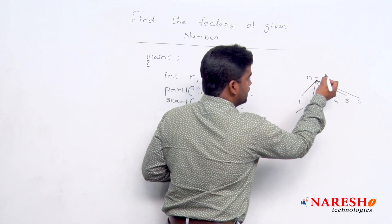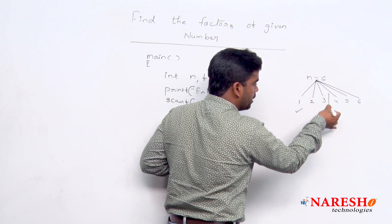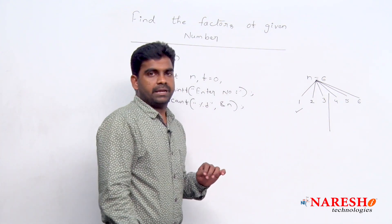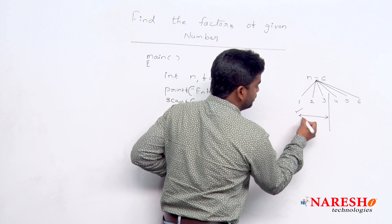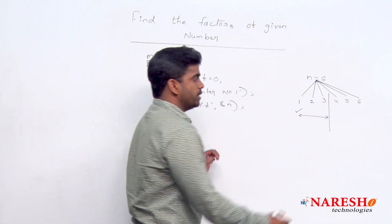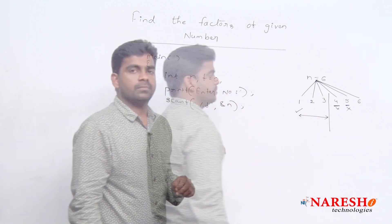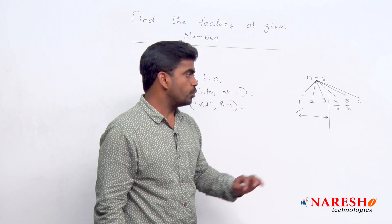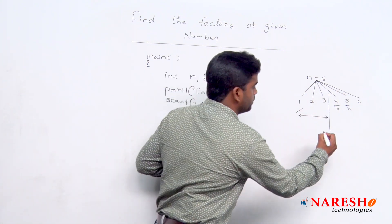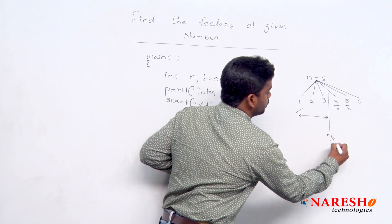Remember here it is just like n by 2, make it half. Left side only we can check the factors because right side values anyway is not divisible. So no need to check. Here up to n by 2 only we are checking.